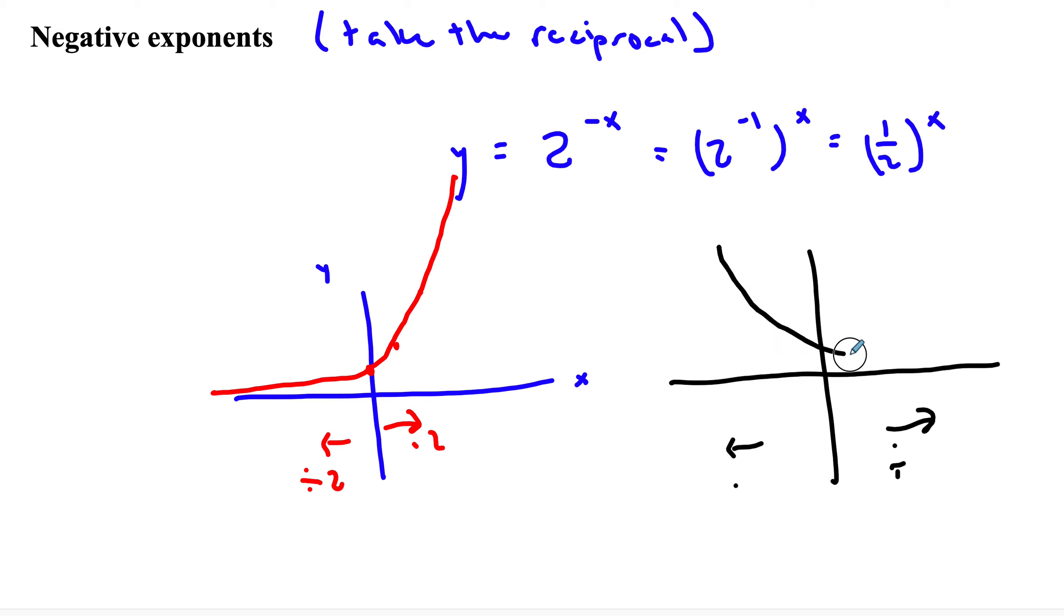So what happens is you end up with something that looks suspiciously like a reflection over the line y equals x. So like let's say that this was y equals 2 to the x, which would definitely be growth, we're doubling each time.